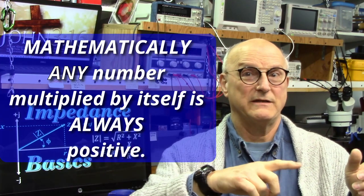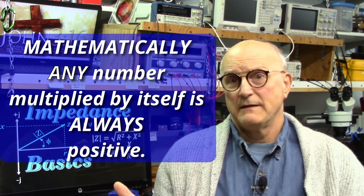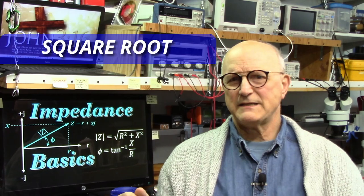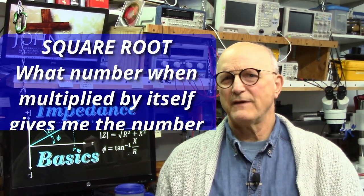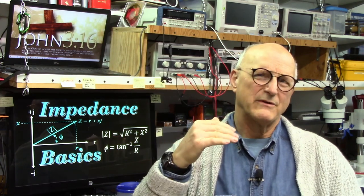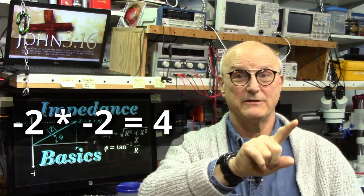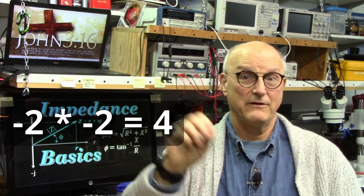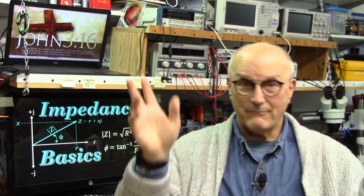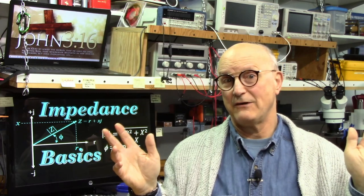So 1 times 1 is a positive 1, but minus 1 times minus 1 is also a plus 1. 2 times 2 is a positive 4, but minus 2 times minus 2 is still a positive 4. The operation of the square root is asking the question: what number when multiplied by itself is the number in question? So the square root of 4 is asking what number when multiplied by itself is 4? There are two answers: minus 2, because minus 2 times minus 2 equals 4, and plus 2 times plus 2 also equals 4. If any number when multiplied by itself is always positive, then there is no number that when multiplied by itself gives minus 1.